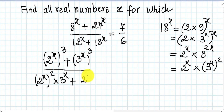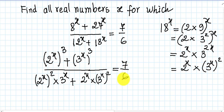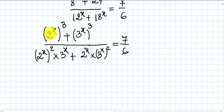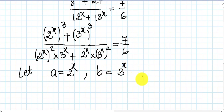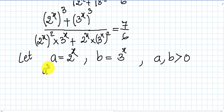So we have 2^x times 3^x all squared equals 7 over 6. We see the common factors 2^x and 3^x appearing throughout. So we let A equal 2^x and B equal 3^x. We know A and B are positive numbers.